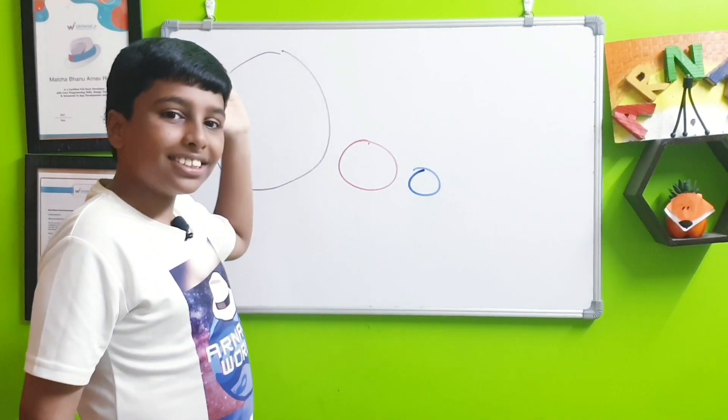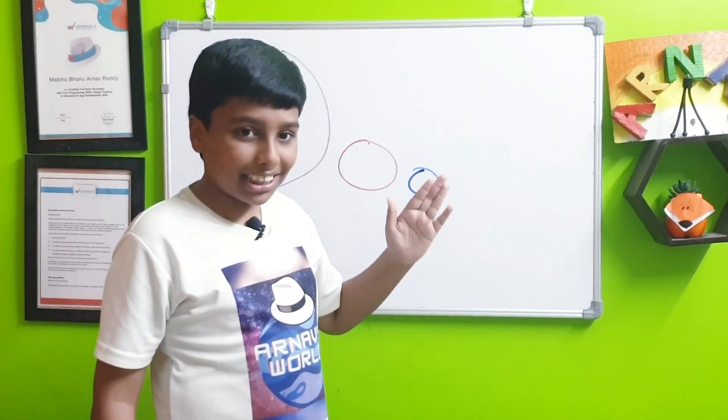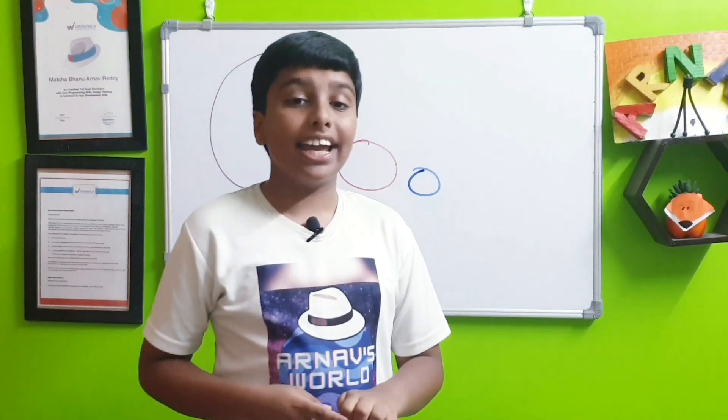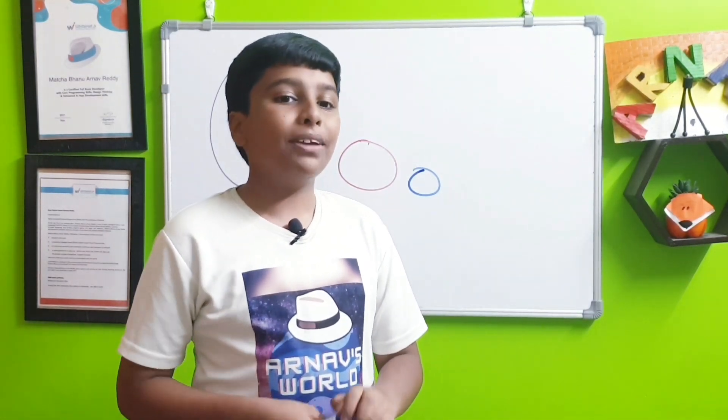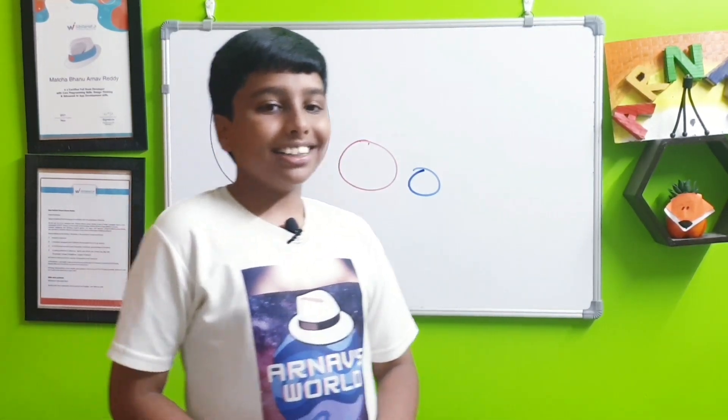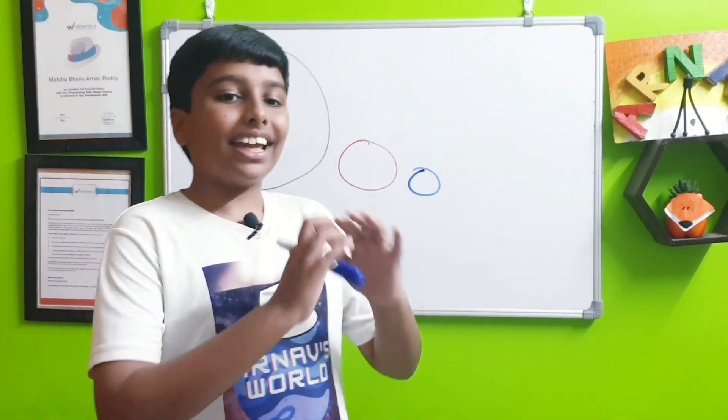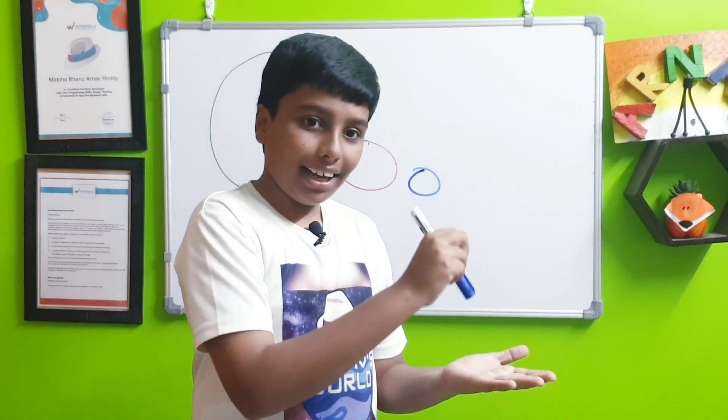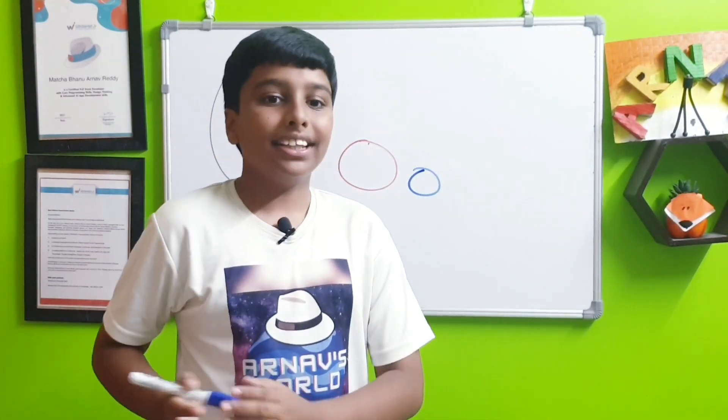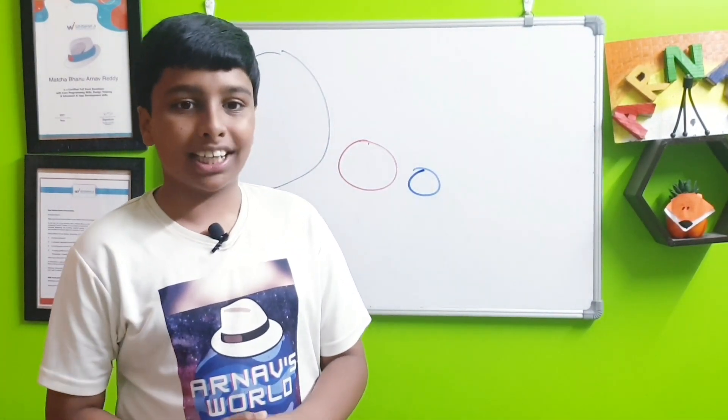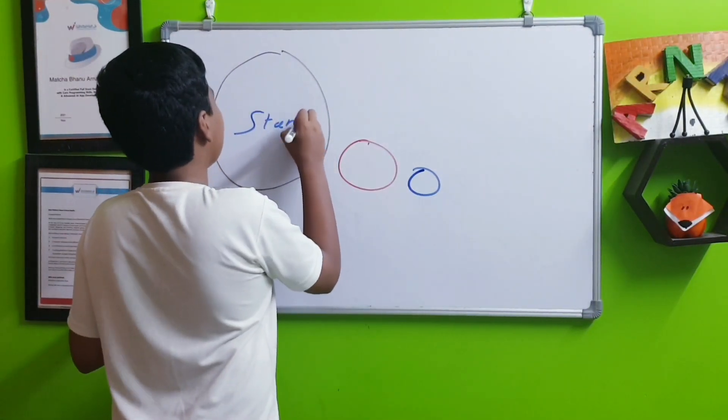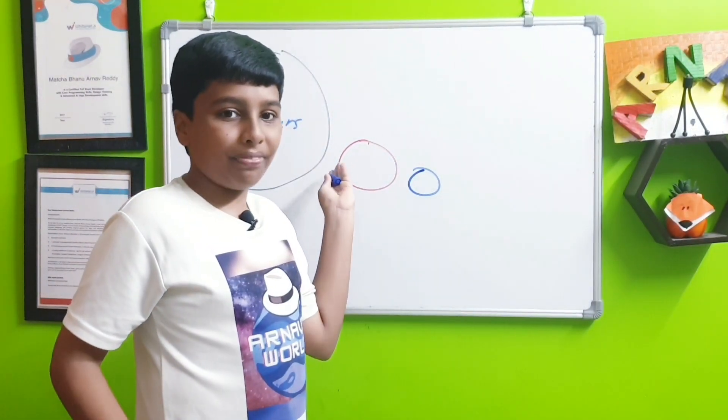For any gaseous celestial body to be a star, it must have at least 80 Jupiter masses. Stars are classified as they can burn hydrogen - that means they can turn hydrogen into helium. They can do proper nuclear fusion. So these are just stars. Even red dwarfs are also counted into the spectrum.